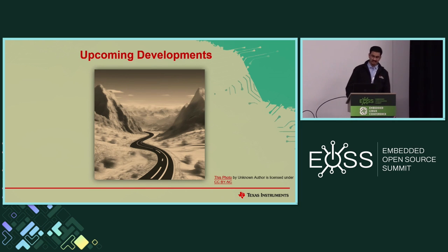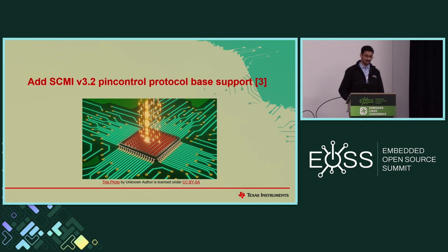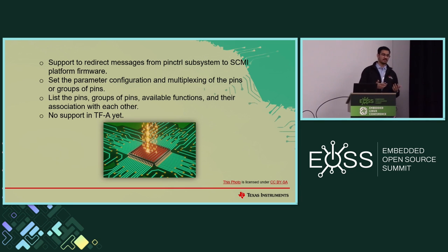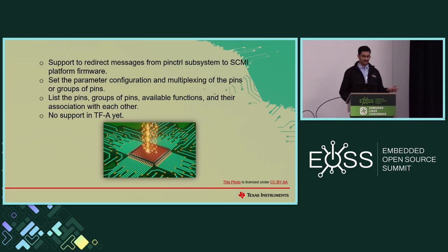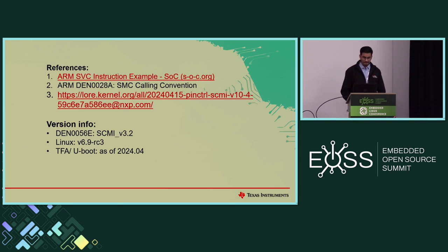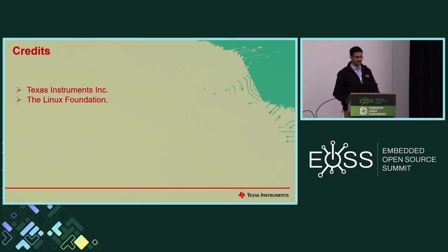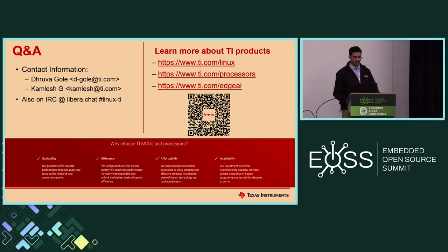Here are some upcoming developments in SCMI. Recently, we are trying to add SCMI pin control protocol support into Linux. As part of this protocol, we can redirect messages from your pin control subsystem into the SCMI platform firmware — where earlier we were setting up pin muxes from Linux, you now have the option to do that from SCMI. Although we are adding this in Linux currently, in upstream ATF there's no support for this yet. We may see this in the coming few months. Here are the references I used throughout this talk — you can refer to them later on. Version info: I've stuck to the SCMI v3.2 spec, Linux 6.9 RC3, and U-Boot and ARM trusted firmware as of April 2024. Special thanks to TI and the Linux Foundation for letting me talk about this topic.